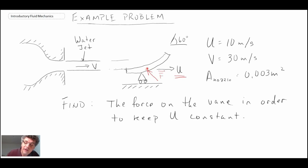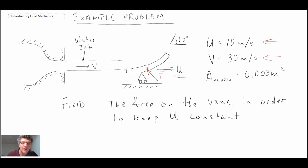The things that are given: the velocity of the cart is 10 meters per second, and that's the velocity we want to maintain. The jet is coming in at a higher velocity — 30 meters per second. So this is a case where we will be doing analysis using a control volume moving at constant velocity. Let's take a look at the solution.